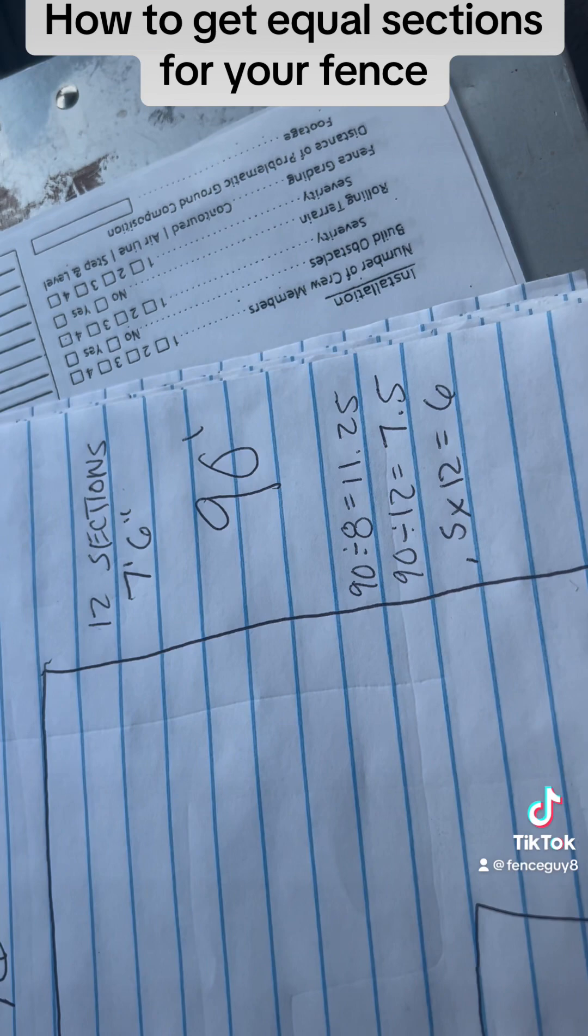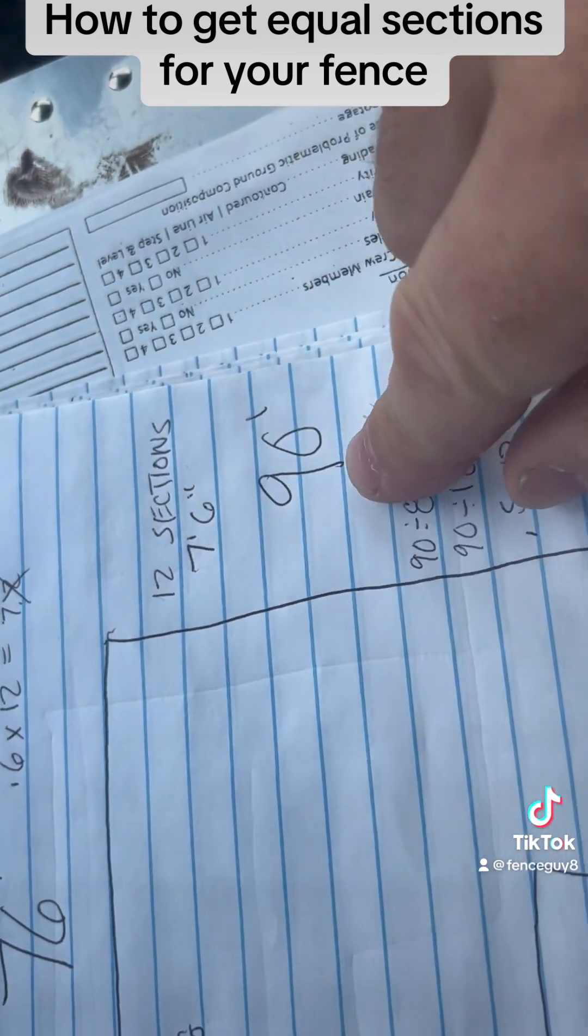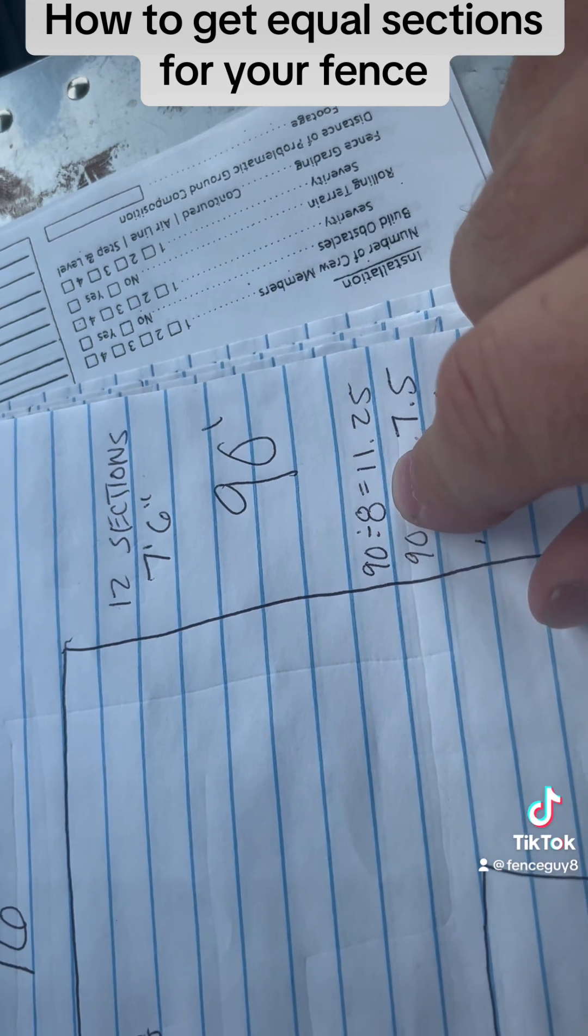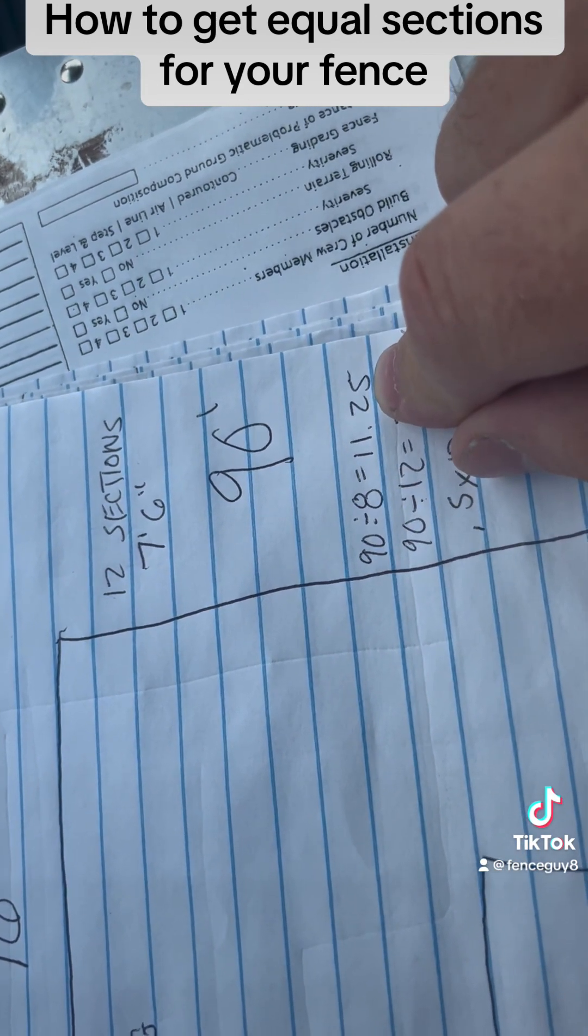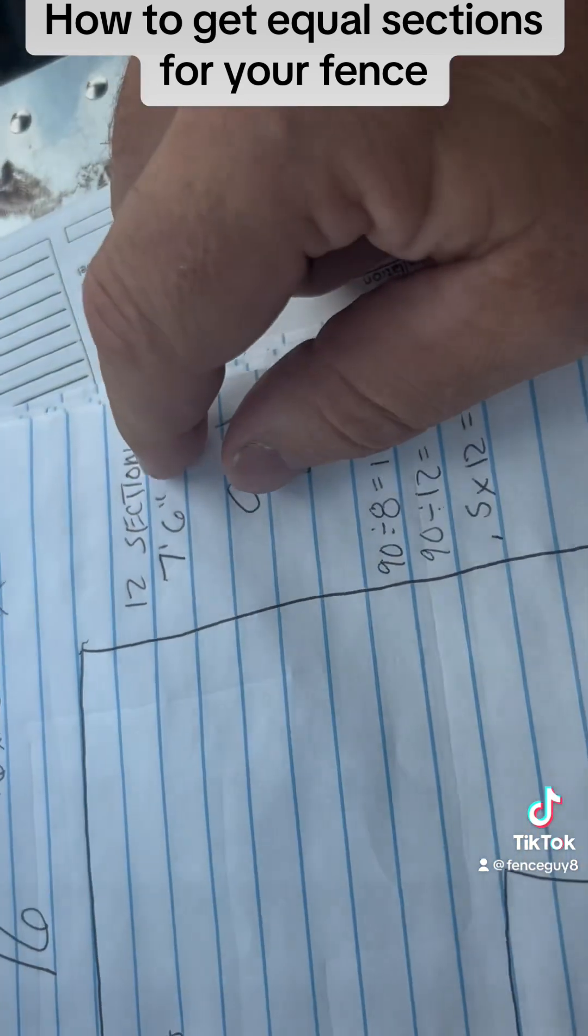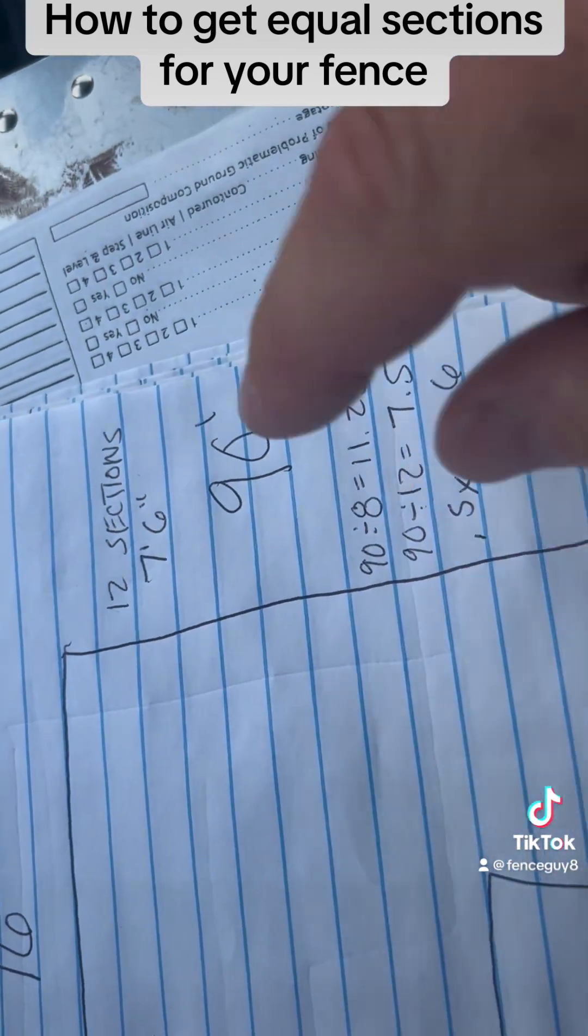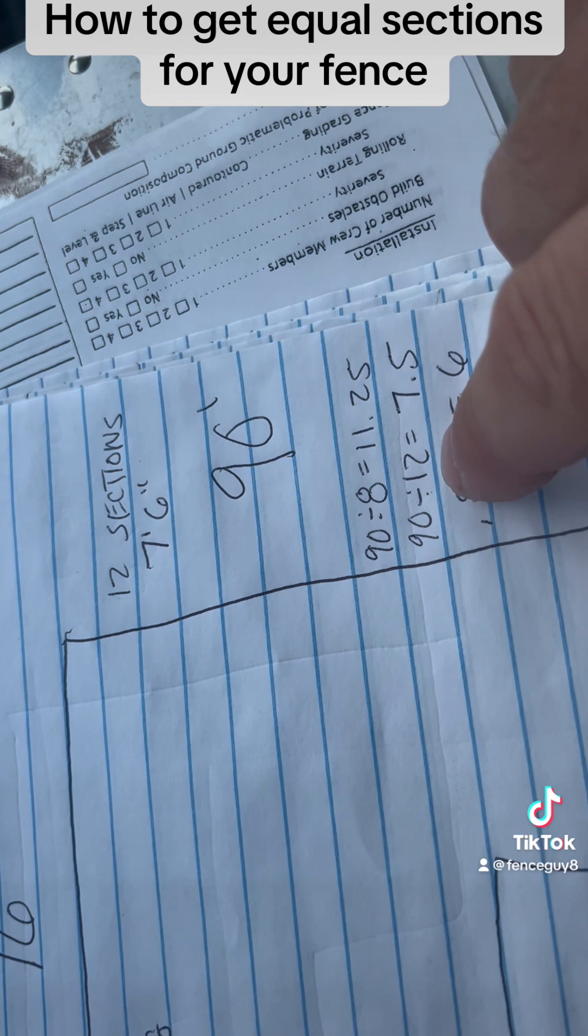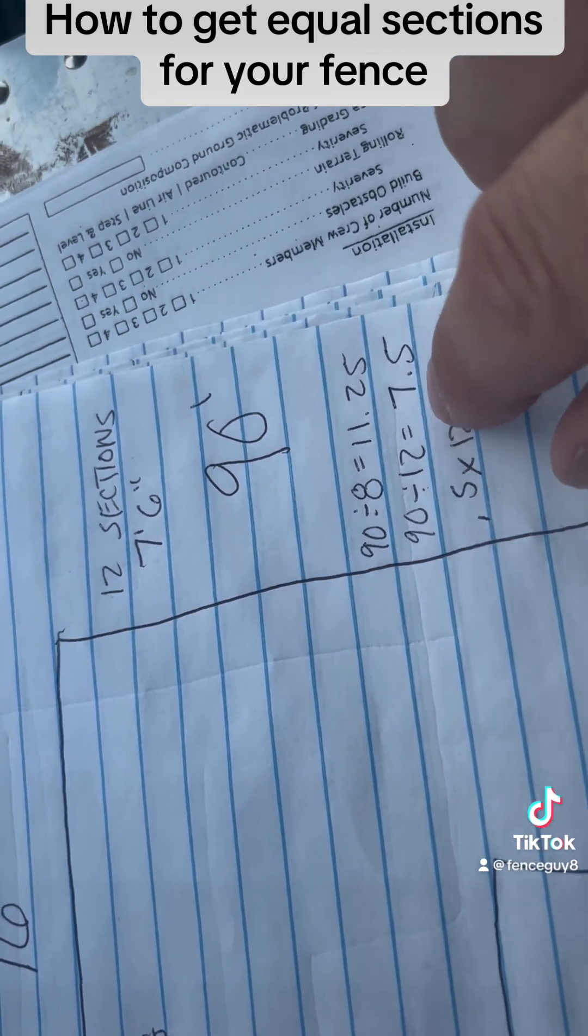So on this side, I did the same thing. Okay, 90 feet. So my first problem is 90 feet divided by 8. I got 11.25, I rounded it up, 12 sections. So then I take that number and divide it into 90. 90 divided by 12 is 7.5. That's my footage, that's my feet, 7.